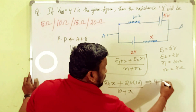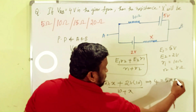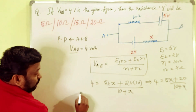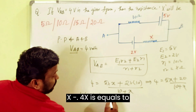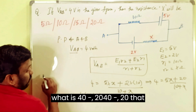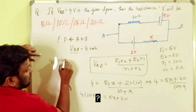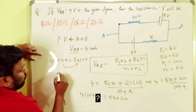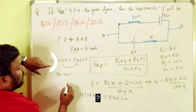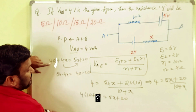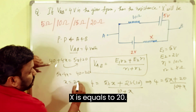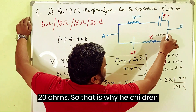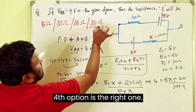Cross multiplication gives 4 times (10 plus X) equals 5X plus 20, so 40 plus 4X equals 5X plus 20. Therefore 5X minus 4X equals 40 minus 20, giving X equals 20 ohms. So X value is 20 ohms — the fourth option is the right one.